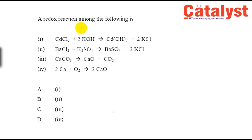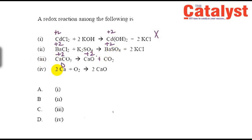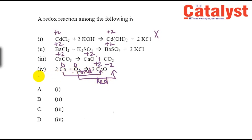The next question asks which reaction is a redox reaction. Cadmium reaction maintains +2 oxidation state — not redox. Barium chloride is a precipitation reaction — not redox. Calcium oxide with CO2: calcium stays +2, carbon stays +4 — not redox. In the last option, caesium in elemental state has oxidation number 0; in caesium oxide, Cs is +2 and O is −2. Caesium goes 0→+2 (oxidation) and oxygen goes 0→−2 (reduction). Answer is option D.